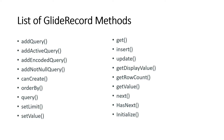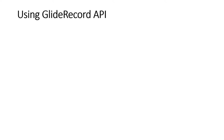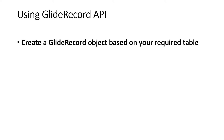All the GlideRecord methods I'm going to discuss in the next video will be purely for GlideRecord methods. Before that, we have to understand how to initialize GlideRecord and how it actually works. If you have any confusion about JavaScript classes and methods, I made a video specifically on that in my JavaScript series — the link will be in the description. First, we have to create a GlideRecord object based on your required table.